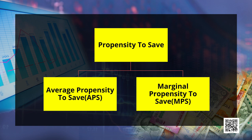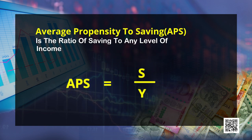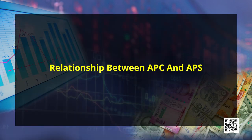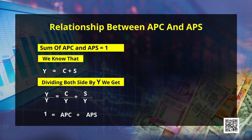Similarly, propensity to save is divided into two parts: Average Propensity to Save (APS) and Marginal Propensity to Save (MPS). APS shows the ratio between savings and national income, depicted by the formula S divided by Y. MPS is the ratio between change in savings and change in national income — what part of increased income is saved. The sum of APC and APS is always unity, that is, always equal to one, since APC = C/Y and APS = S/Y, and C + S = Y.